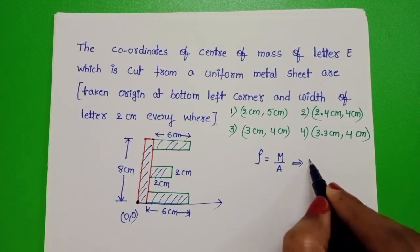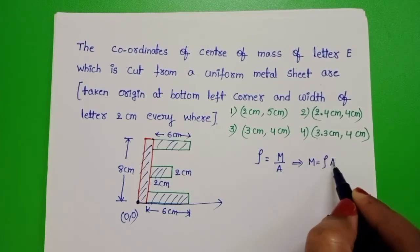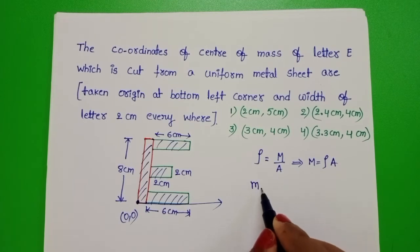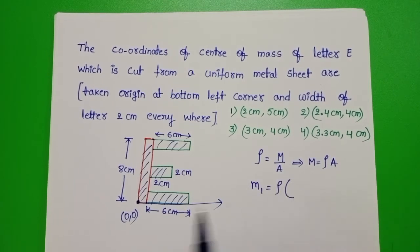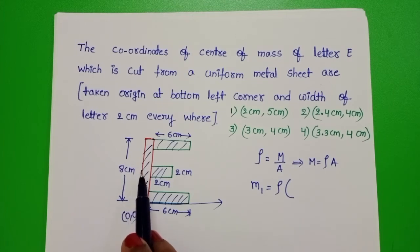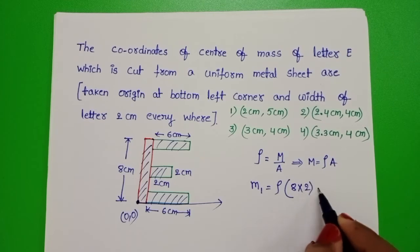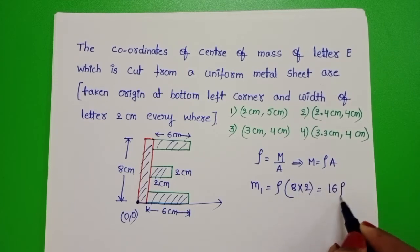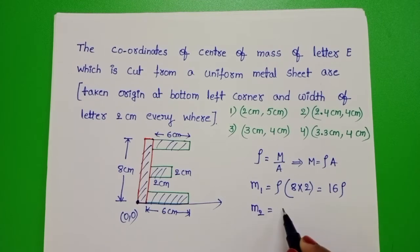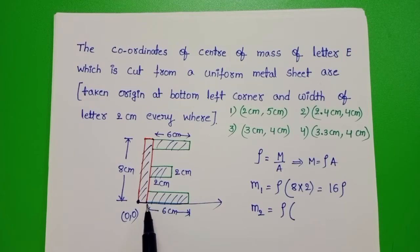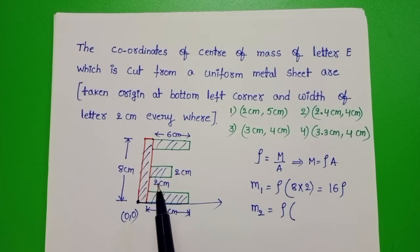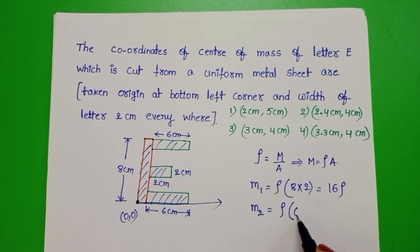Mass of the first part M1 equals rho into area of cross section of this part. Length 8 cm, width is 2 cm. 8 times 2, that equals 16 rho. Mass of the second part M2 equals rho into area of cross section of this part. Length is 6 cm, width is 2 cm. Everywhere width of this letter is constant. 6 times 2, that equals 12 rho.